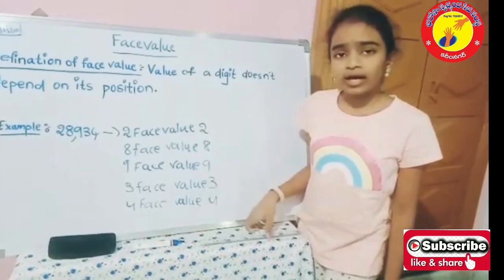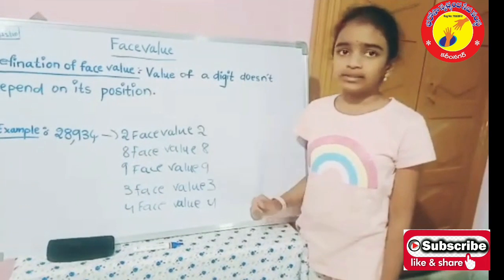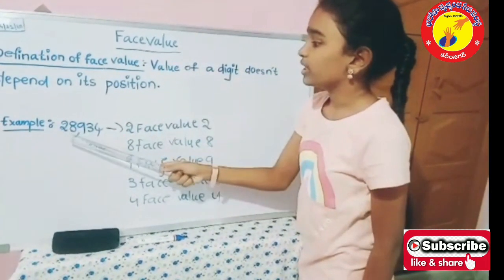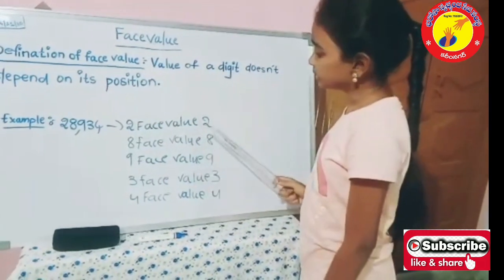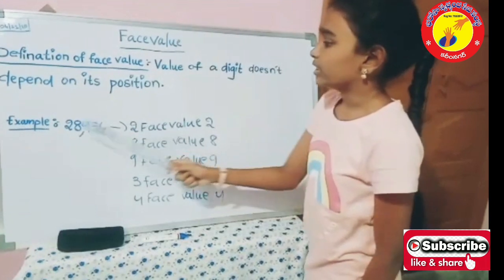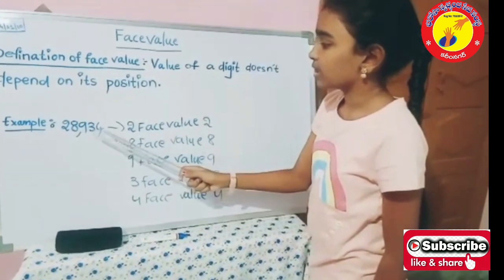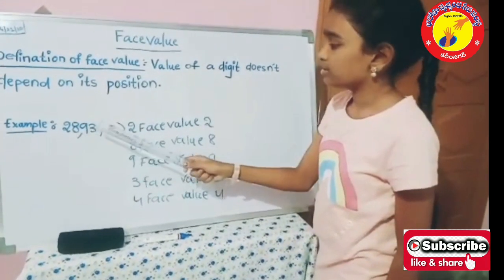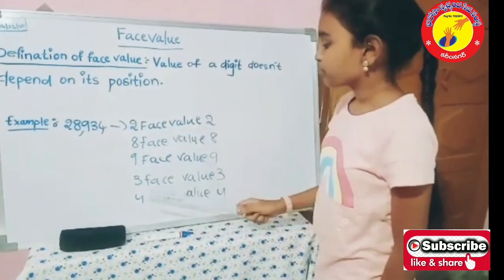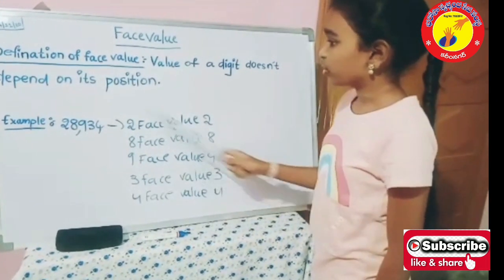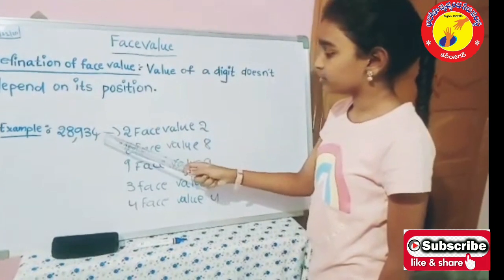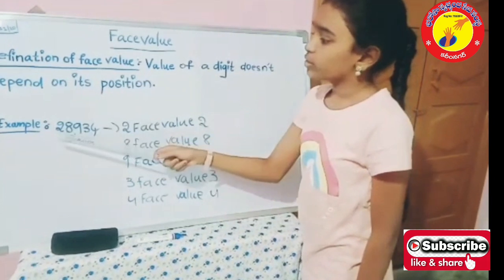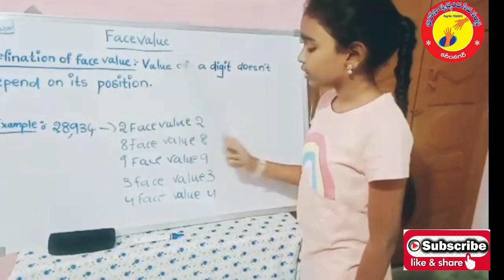Now, we will take another example. 28934. 2 face value is 2. 8 face value is 8. 9 face value is 9. 3 face value is 3. 4 face value is 4.